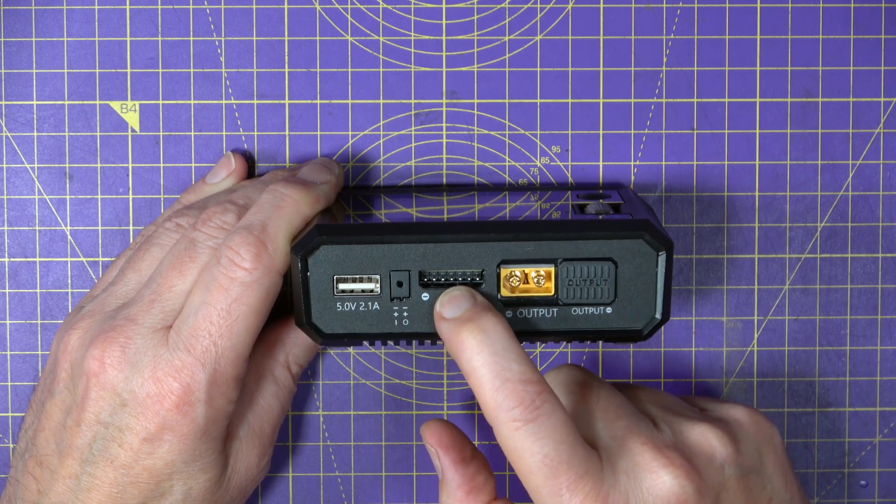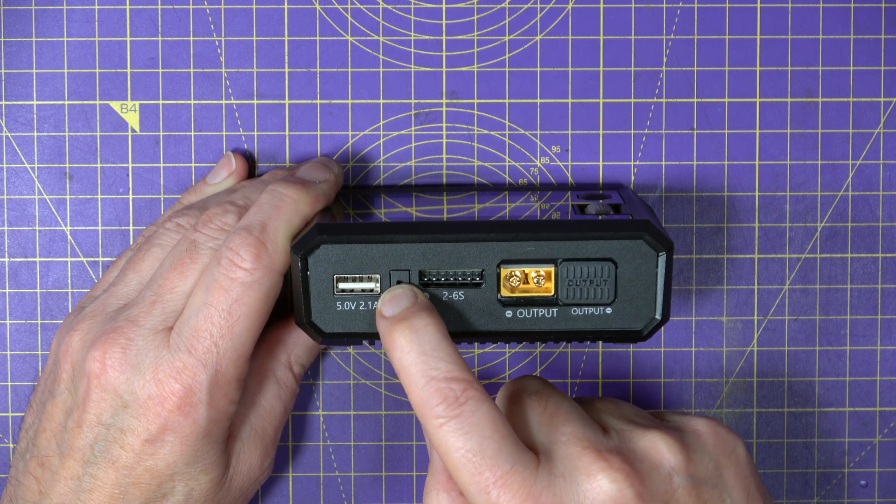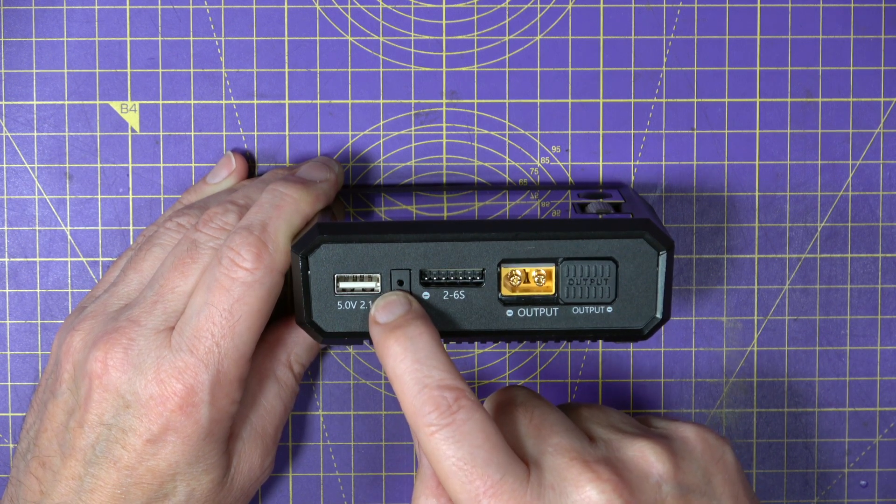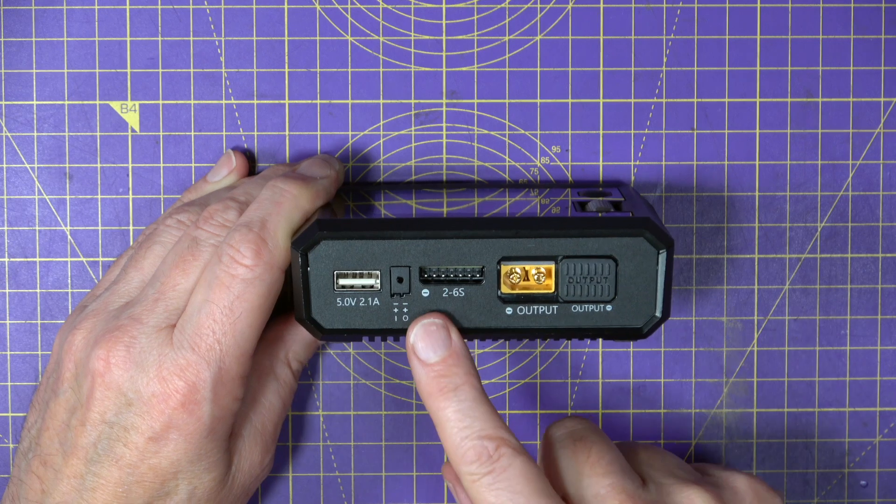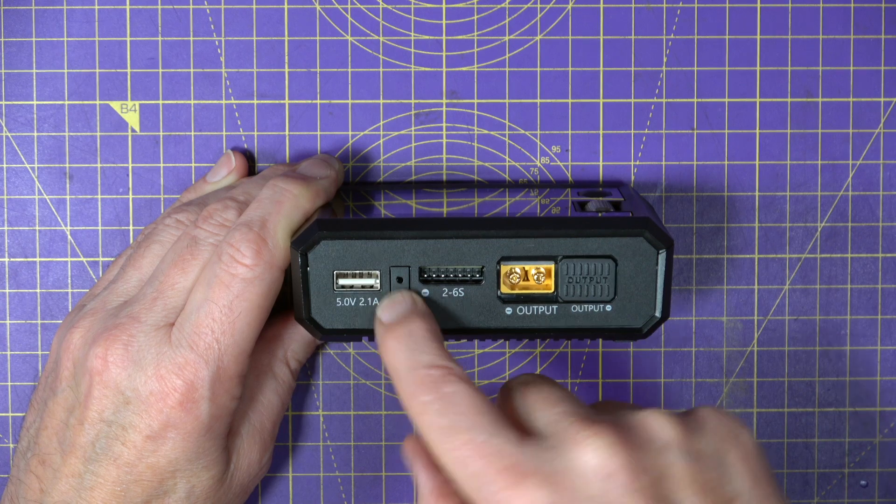There's a 2 to 6s balance port and there's this little removable cover here for standard servo plug style connectors. And if you're using this as a signal generator or a measurer you can plug them into either of the connections under here.